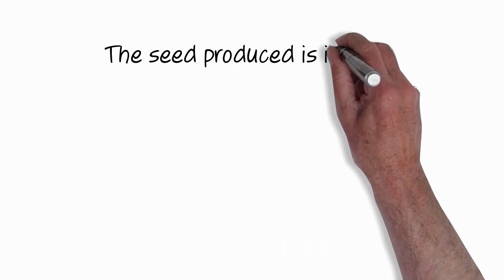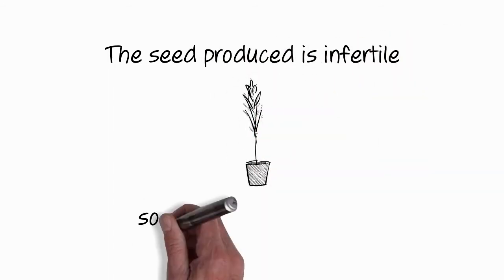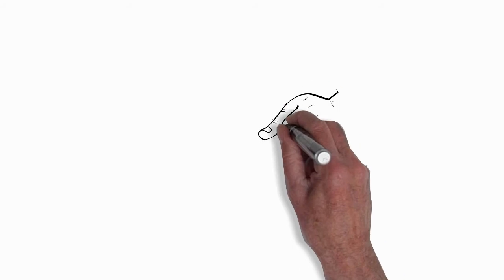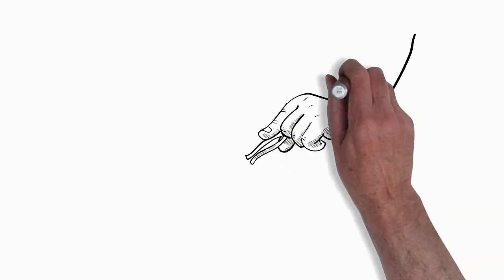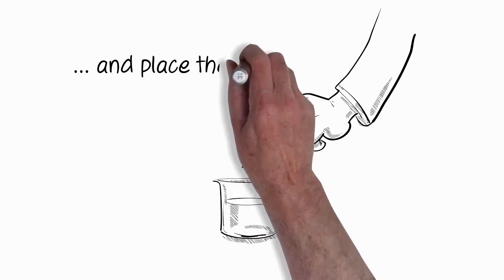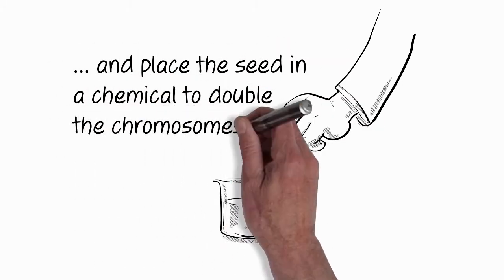The seed that initially develops in this cross is infertile. So to make it fertile we have to remove the seed and place it in a chemical that will double the amount of chromosomes in that seed and that will enable it to produce its own offspring itself.